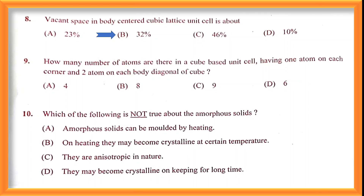Question number nine: how many atoms are there in a cube-based unit cell having one atom on each corner and two atoms on each body diagonal? The corner contribution is 1/8 per corner atom. Going on solving, you will get 9 as the answer. Option C is correct.